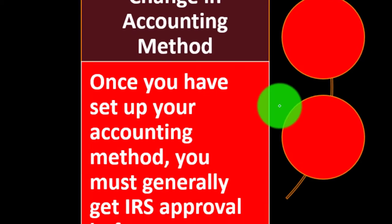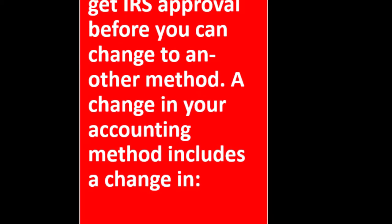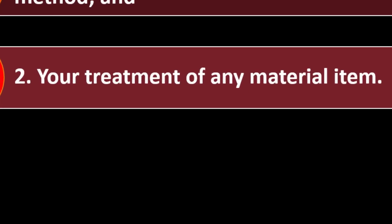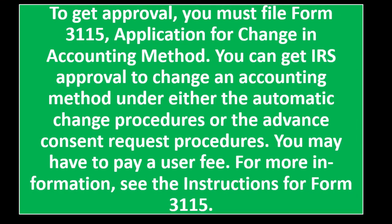So, changing an accounting method: once you have set up your accounting method, you must generally get IRS approval before you can change to another accounting method. A change in accounting method includes a change in your overall method, such as from cash to accrual, and your treatment of a material item. To get approval, you must file Form 3115, Application for Change in Accounting Method. You can get IRS approval under either the automatic change procedures or the advanced consent request procedure. You may have to pay a user fee — see the instructions for Form 3115.